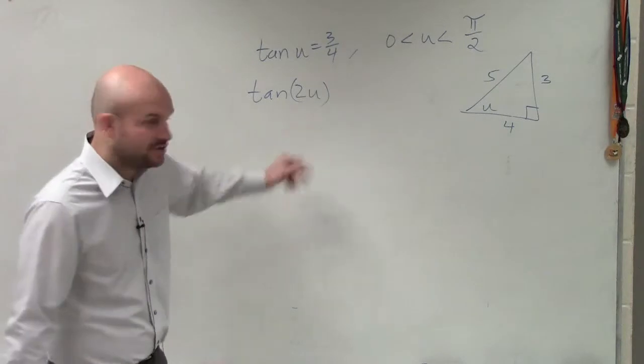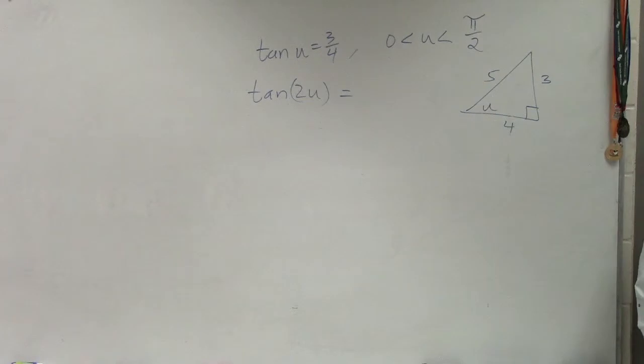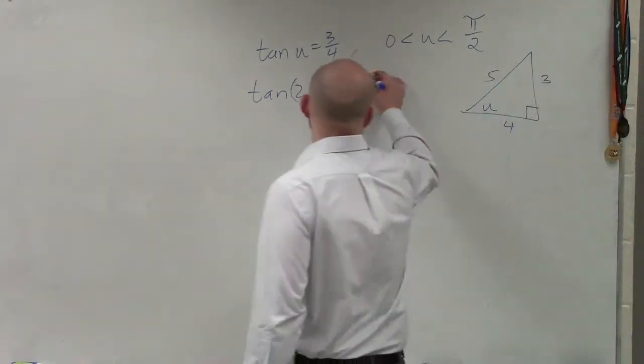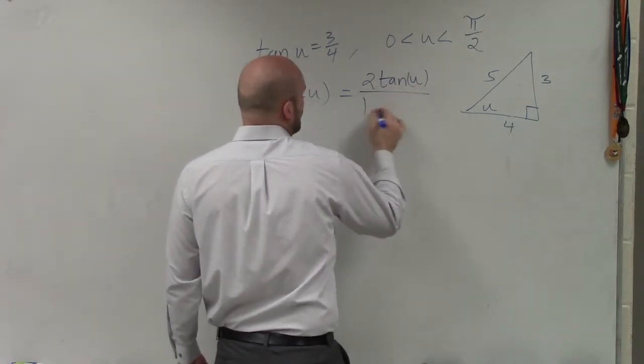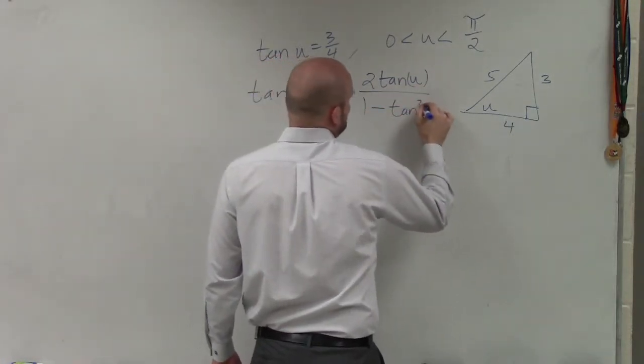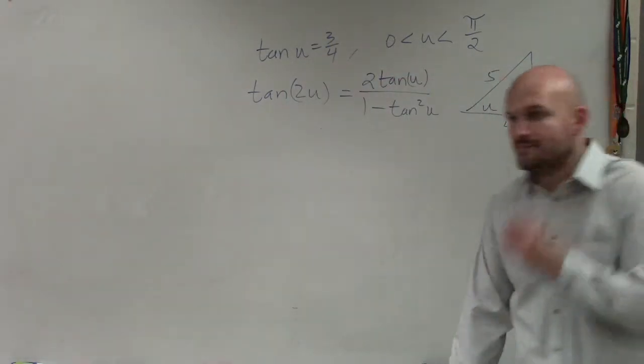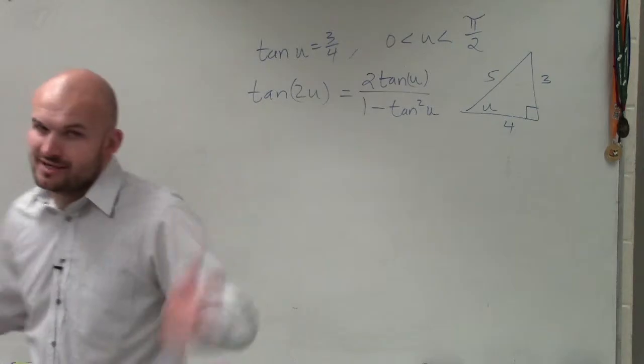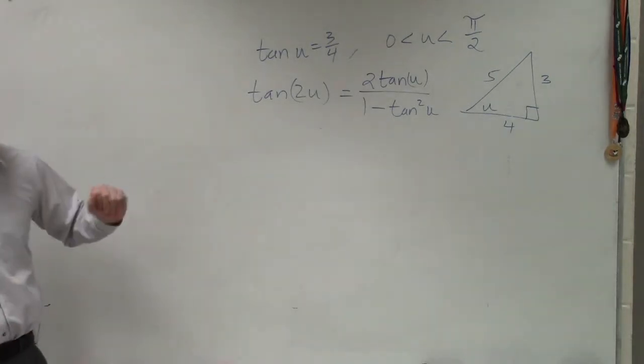But for the tangent of 2u, we have a different formula. So on page 387, as I mentioned, what you guys are going to want to do for the tangent of 2u is 2 tangent of u over 1 minus tangent squared of u. So now we already know tangent of u, right? They already gave it to us. So we don't need to figure out anything with the triangle. Now we just need to plug everything in.